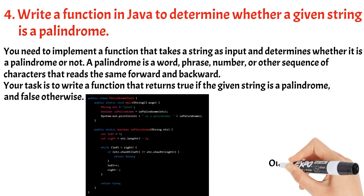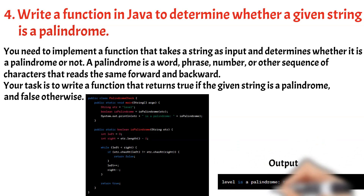In this example, the isPalindrome method takes a string STR as input and checks if it is a palindrome. It initializes two pointers, left and right, pointing to the beginning and end of the string respectively. Using a while loop, it compares the characters at the left and right positions. If they are not equal, it returns false as the string is not a palindrome. The left pointer moves to the right and the right pointer moves to the left in each iteration. This process continues until the left pointer surpasses the right pointer, indicating the entire string has been checked. If the loop completes without returning false, the string is a palindrome and the method returns true.